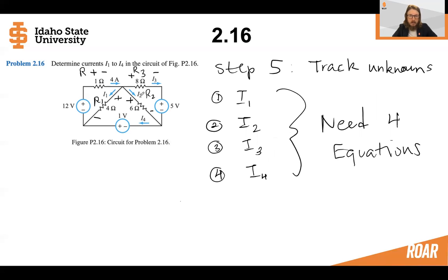Now let's keep track of our unknowns. So how many unknowns are there? We have four currents, which are all unknown. So we'll say that we have four unknowns. So because we have four unknowns, we need four different equations to solve this circuit.